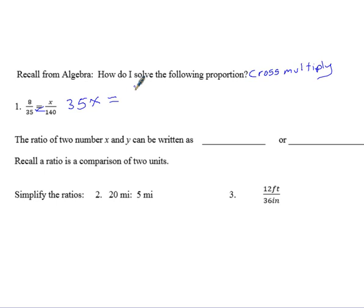So when I cross multiply, 35 times x is 35x. Don't forget the equal sign. I always see students forgetting to put the equal sign there. 8 times 140 is 1,120. And then from here, we just solve for x. Divide both sides by 35, and we get an answer of x equals 32.